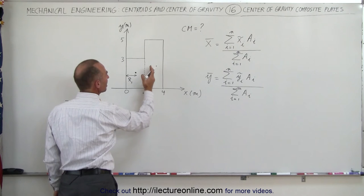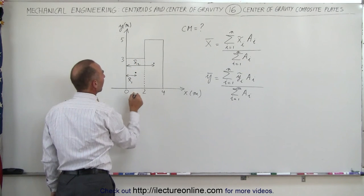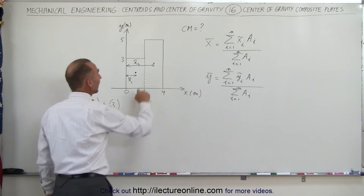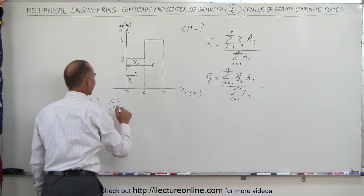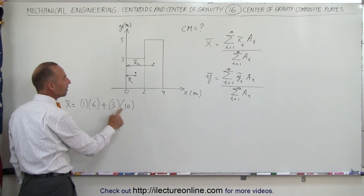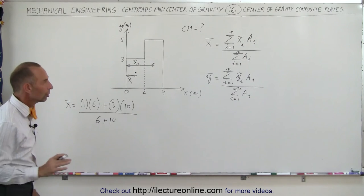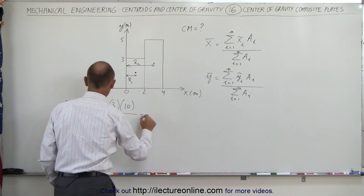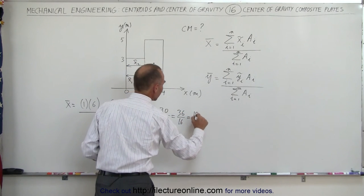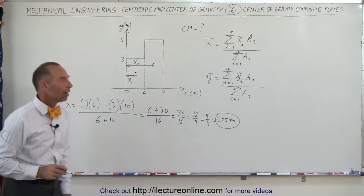We add the x coordinate of the second rectangle, x sub 2, which is halfway between 2 and 4, so that's 3. The area of that piece is width 2 times height 5, which is 10. So we have 1 times 6 plus 3 times 10, divided by 6 plus 10. That's 6 plus 30 divided by 16, which equals 36 over 16, simplified to 9 over 4, which is 2.25 meters — the x coordinate of the entire plate.